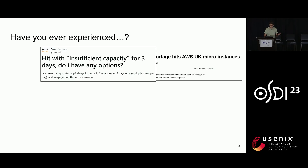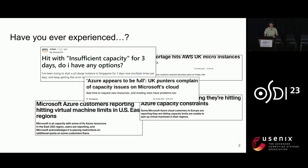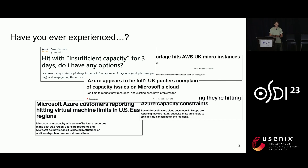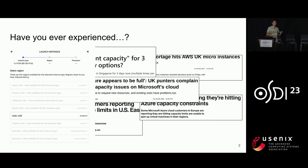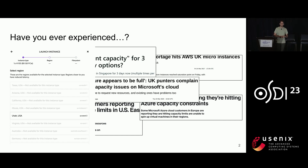Many of us have experienced issues or problems obtaining capacity in public clouds. You might ask for a certain number of VMs and get an error saying we can't actually provision those for you. In many cases, you might actually be able to get that capacity, but not exactly where you want it — maybe not in the region or availability zone that you would like.